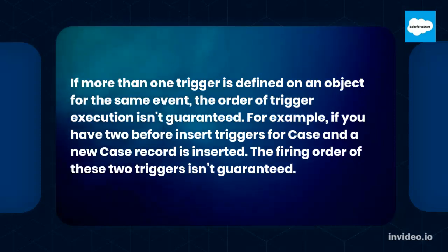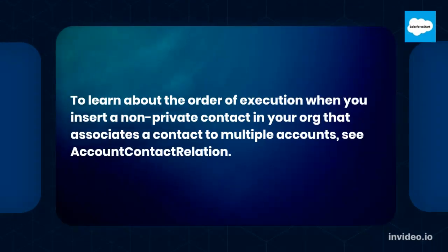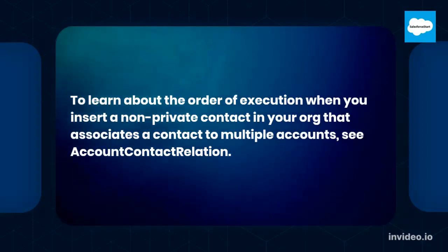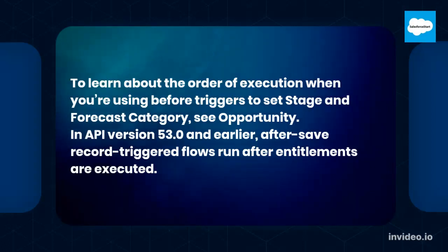If more than one trigger is defined on an object for the same event, the order of trigger execution isn't guaranteed. For example, if you have two before insert triggers for Case and a new Case record is inserted, the firing order of these two triggers isn't guaranteed. To learn about the order of execution when you insert a non-private contact in your org that associates a contact to multiple accounts, see Account-Contact Relation. To learn about the order of execution when you're using before triggers to set stage and forecast category, see Opportunity.